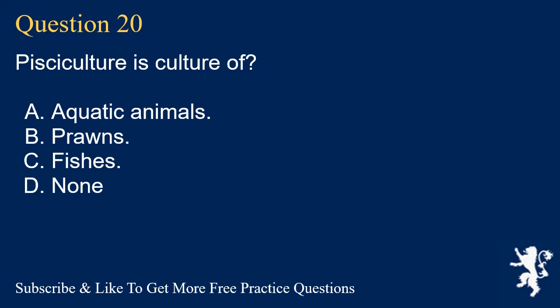Question 20. Pisciculture is culture of? A. Aquatic animals. B. Prawns. C. Fishes. D. None. Answer: B. Prawns.